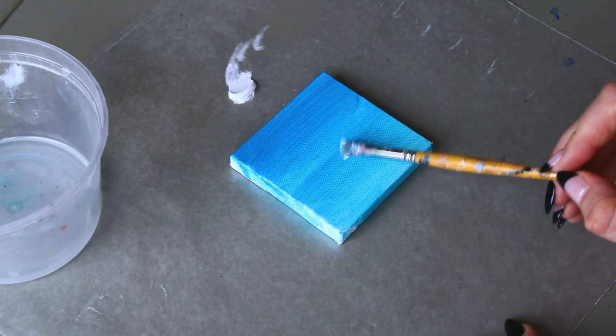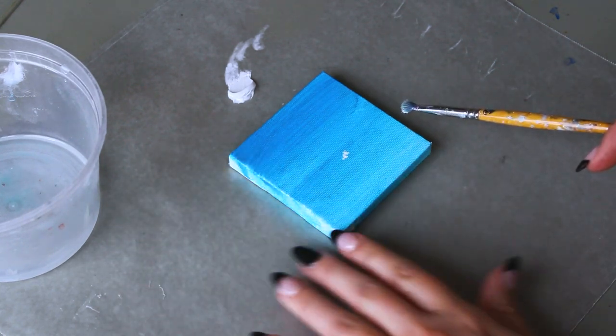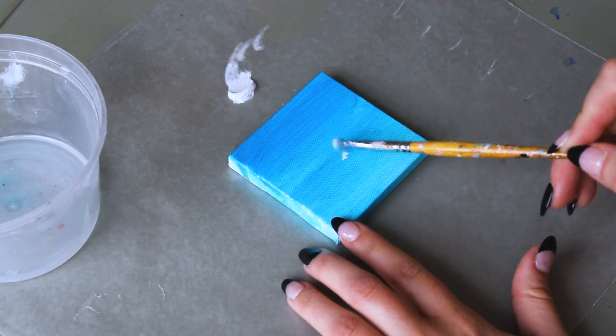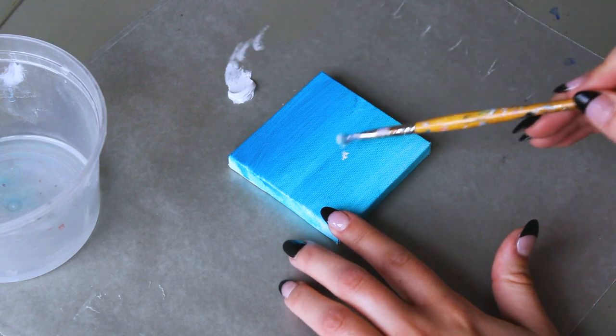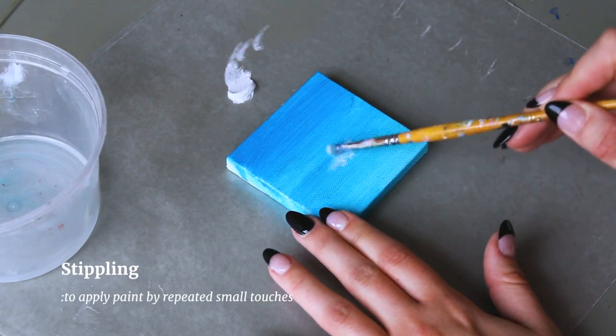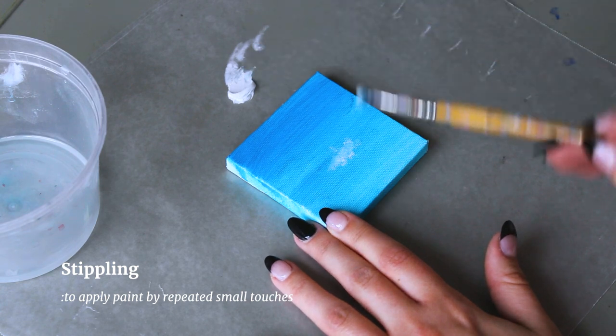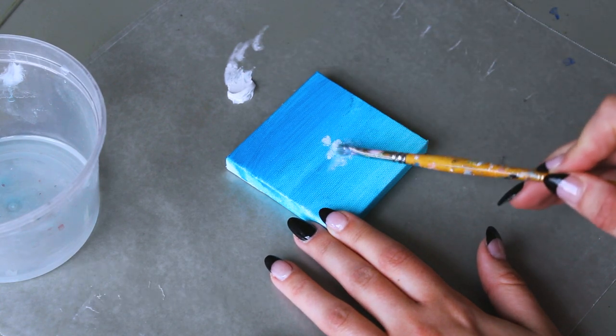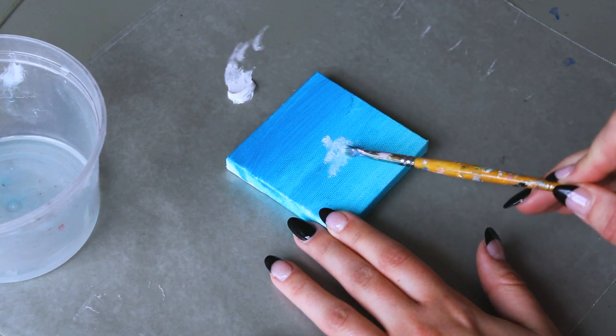To start, I will use my smallest flathead brush. Turning the brush on its side, I apply titanium white using the stippling technique. Stippling is when you pat the paper with your brush, creating an uneven texture on your surface. This technique creates the airy texture of clouds.